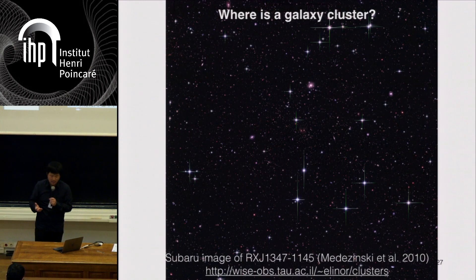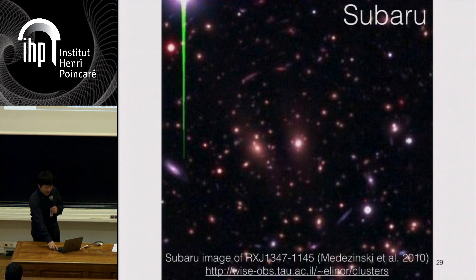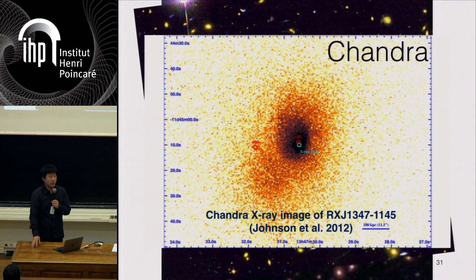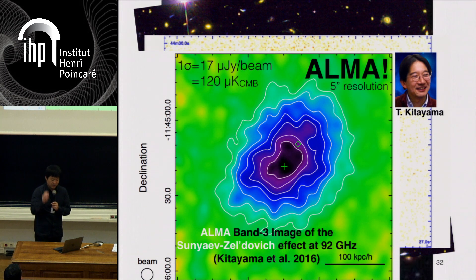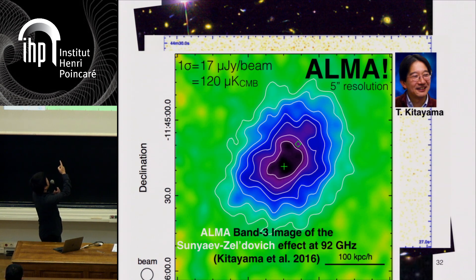Now let me start talking about the Sunyaev–Zel'dovich effect. There's a galaxy cluster buried in this image. What you typically do is look for red galaxies, because galaxy clusters tend to contain red galaxies. You go to the Hubble Space Telescope and get a sharper image; go to X-ray and you get a booming signal proportional to density squared; go to microwave and you get a hole — a negative flux compared to the background CMB. This is the Sunyaev–Zel'dovich effect. I also want to show off this image: this is the first SZ image taken by ALMA and the highest sensitivity SZ image ever taken — in units of micro-Jansky in radio images.